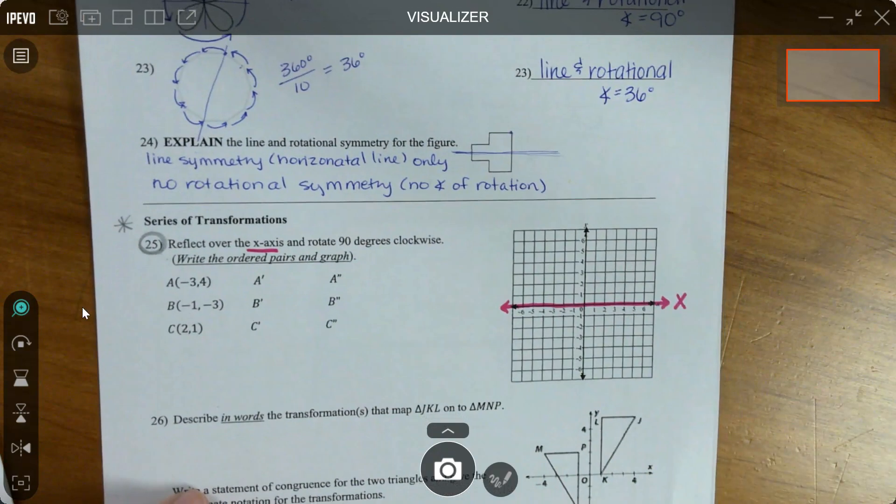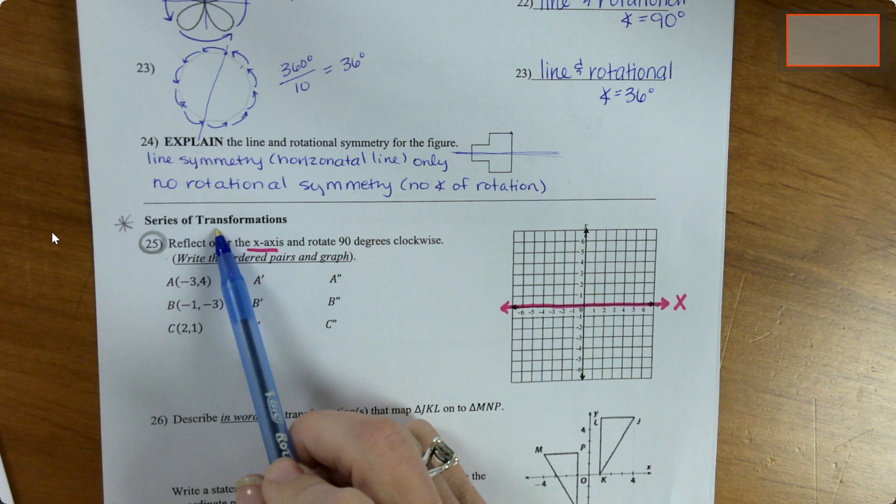Okay, so we are now to part five. This is the series of transformations, which means one transformation after another.